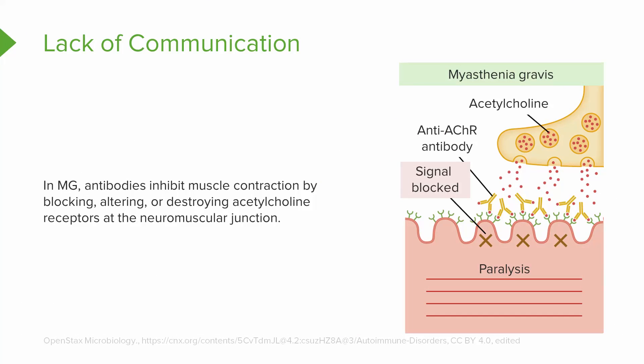In myasthenia gravis, there are antibodies — immune proteins — that alter or destroy the receptors for acetylcholine at the neuromuscular junction. A neurotransmitter without a functioning receptor is not going to work. That's where the problem is, and that's why the patient experiences paralysis.